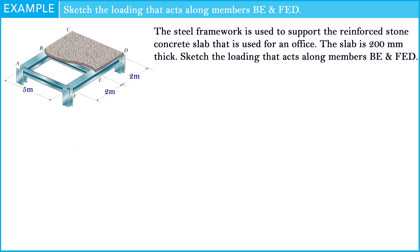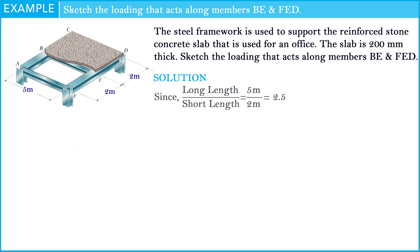First of all, we need to look at the picture and find the behavior of the slab, which acts as a one-way slab or two-way slab. To compute the behavior of the slab, just divide the long side of the slab by the short side. If the result is less than 2, the slab behaves as a two-way slab. But if the result is more than 2, the slab behaves as a one-way slab. The result of our example is 2.5, so the slab will behave as a one-way slab.